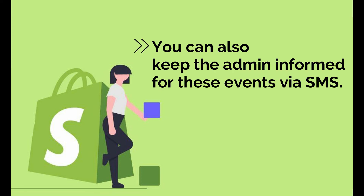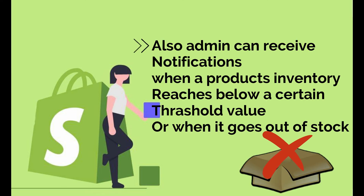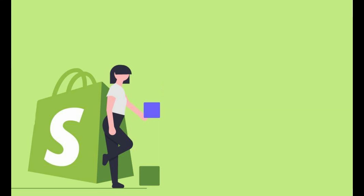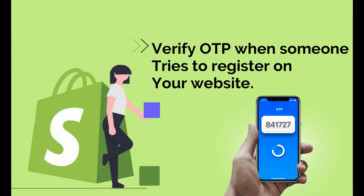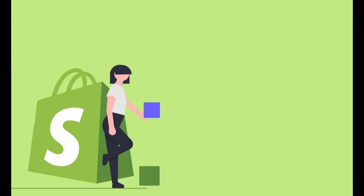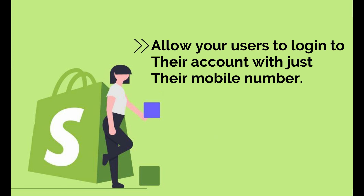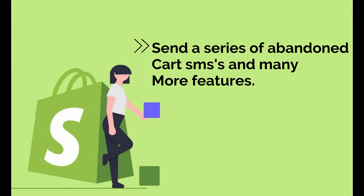You can also keep the admin informed for these events via SMS. The admin can also receive notifications when a product's inventory reaches a certain threshold value or when it goes out of stock. You can even verify orders via OTP before they are placed, verify OTP when someone tries to register on your website, allow your users to log into their account with just their mobile number, send a series of abandoned cart SMSs, and many more features.